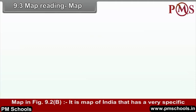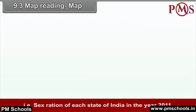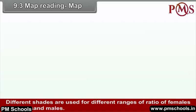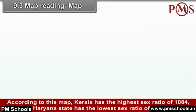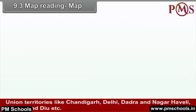Map in Figure 9.2B is a map of India with a very specific theme: the sex ratio of each state of India in the year 2011. Different shades are used for different ranges of ratio of females per thousand males. Besides shades of color, the actual sex ratio of each state is also given. According to this map, Kerala has the highest sex ratio of 1084 whereas Haryana has the lowest sex ratio of 877.